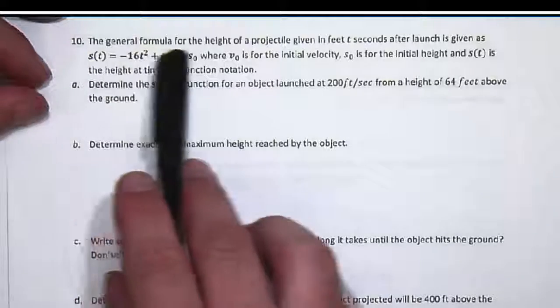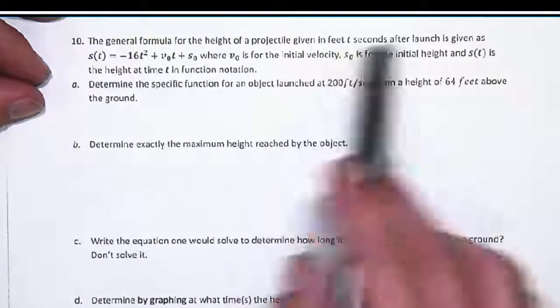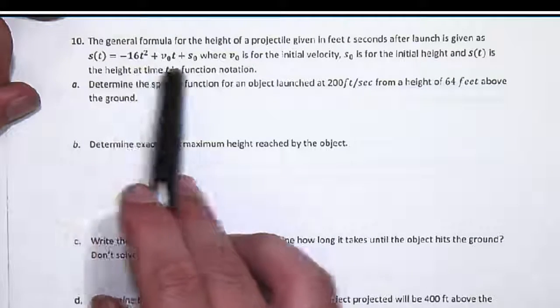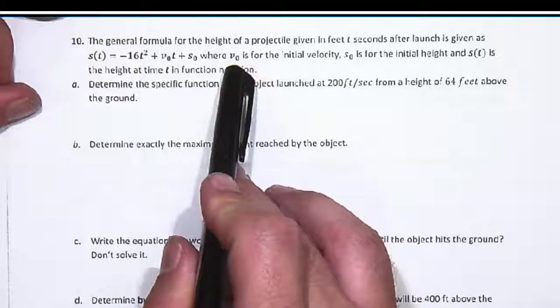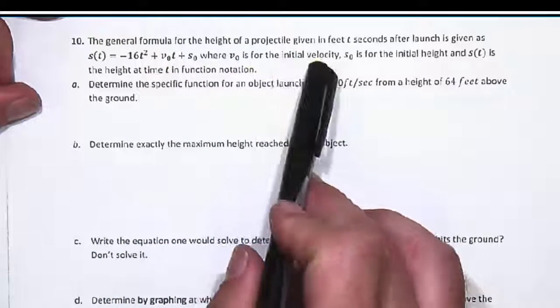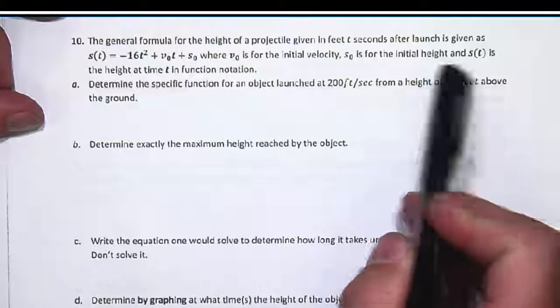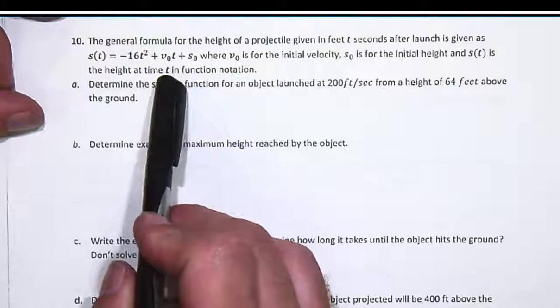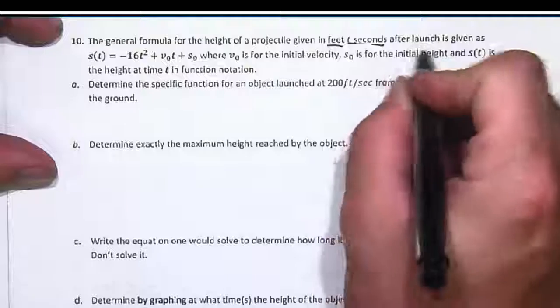The general formula for the height of a projectile given in feet, t seconds after its launch, is given as s(t) equals negative 16t squared plus v₀t plus s₀. v₀ is the initial velocity, s₀ is the initial height, and s(t) is the height at time t in function notation. This gives the height in feet t seconds after launch.